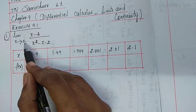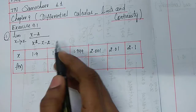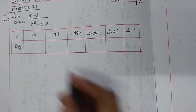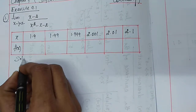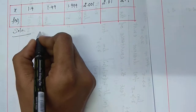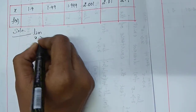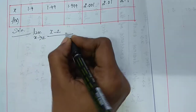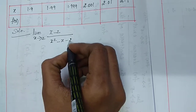Solution: limit as x tends to 2 of (x minus 2) divided by (x squared minus x minus 2).